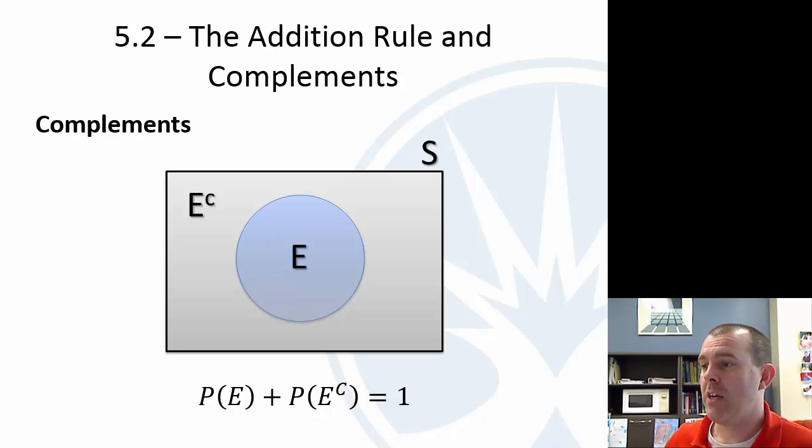And this can be really beneficial. Sometimes an event E itself can be a little complicated, and it's difficult to calculate. But if you know the probability of its complement, you can just take one minus the probability of its complement. So sometimes that's useful, again, if E is a fairly complicated event...